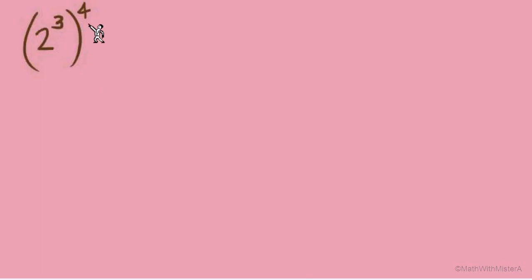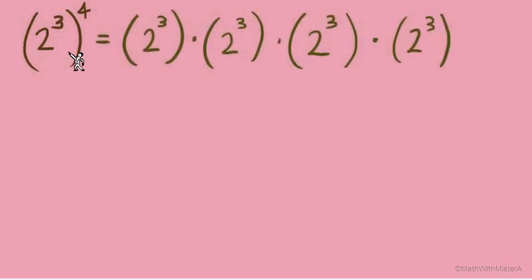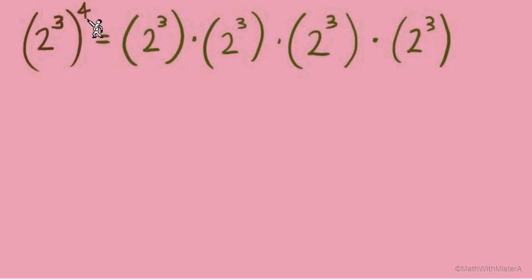Let's look at this in expanded form. The exponent of 4 on the outside tells us that something is being multiplied again and again for a total of 4 times. Since this exponent is on a set of parentheses, it tells us that it is this entire quantity — 2 to the 3rd — that is acting as our base. So we have 2 to the 3rd times 2 to the 3rd times 2 to the 3rd times 2 to the 3rd, a total of 4 times.